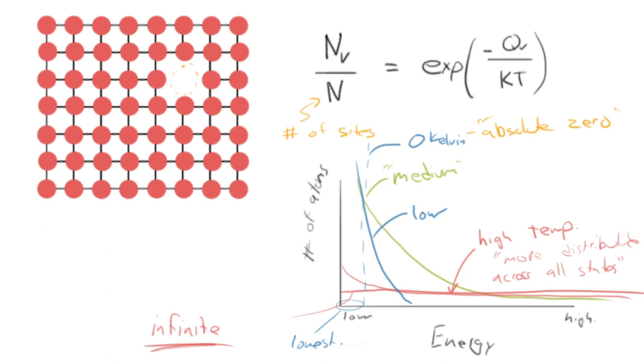And anyway, this distribution here that I've sketched for you is known as the Boltzmann distribution. Now if you apply this to a gas, you might see a more familiar distribution, which is the Maxwell-Boltzmann distribution, but it derives from the same concept.